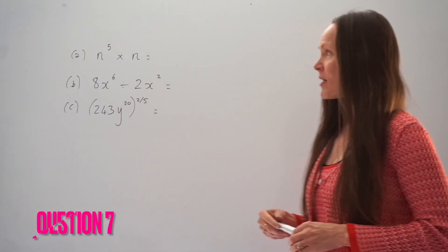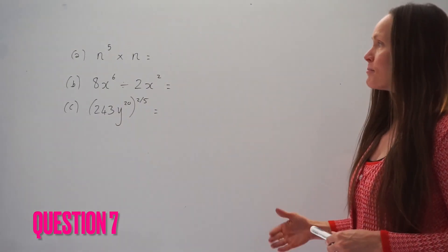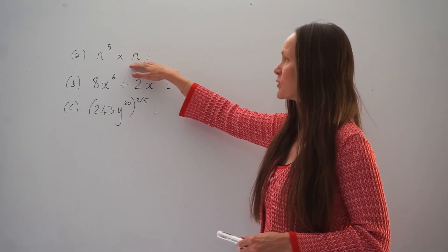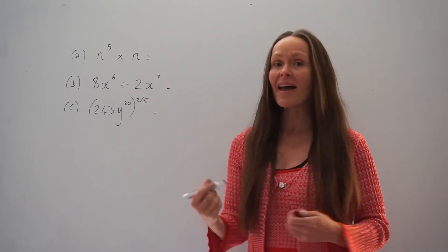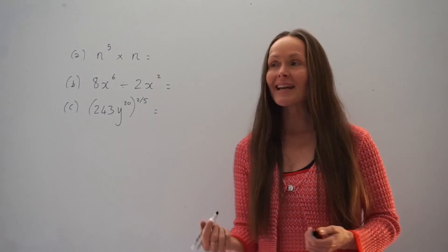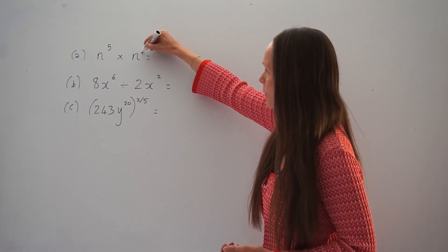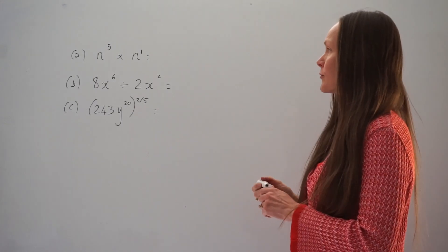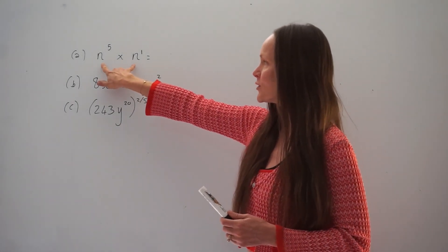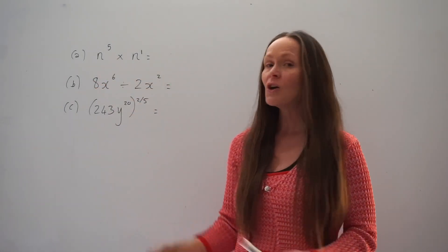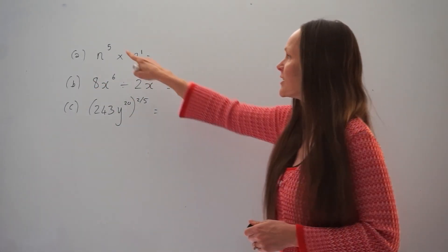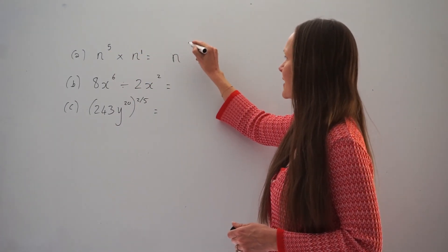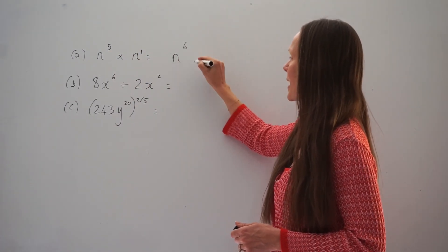There are three parts in this exam question. In part A, we have to work out N to the power of 5 multiplied by N. Remember, N is the same thing as N to the power of 1 — we just don't write the 1 usually. When you're multiplying these two letters together, you must add their powers. So 5 plus 1 is 6, so the answer to part A is N to the power of 6.